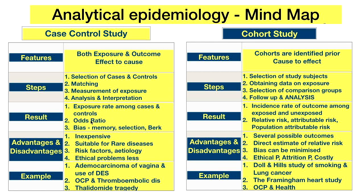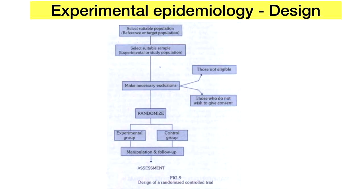In analytical epidemiology we can only measure the strength of association — odds ratio or relative risk — but to prove a true causal association we move to experimental study design. Steps include: selecting a suitable study population (reference or target population), selecting a suitable sample (the experimental or study population), making necessary exclusions of ineligible or non-consenting individuals, and then proceeding to randomization. Randomization is called the heart of the experimental study design.